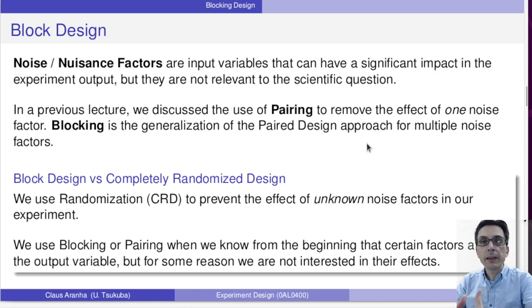Now, thinking about all the factors, there is something that we call noise or nuisance factors. Noise factors are input variables that can have a significant impact in the experiment output, but they are not relevant to the scientific question that we want to ask.